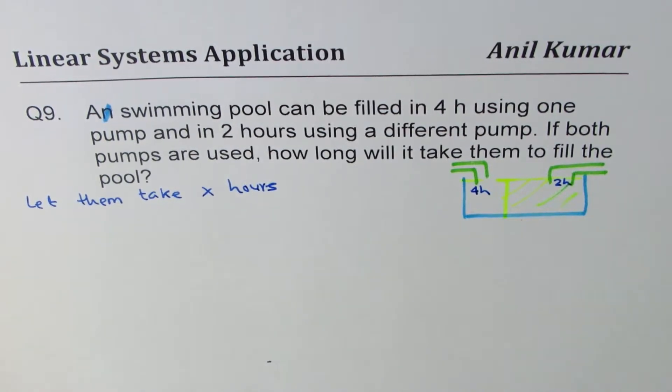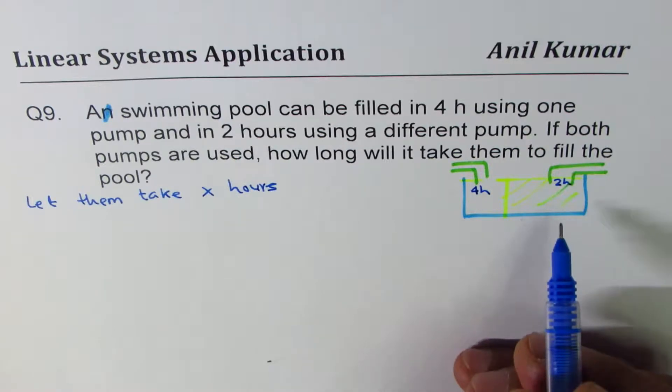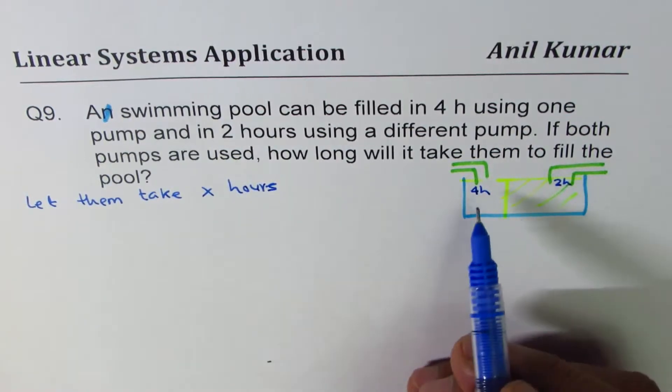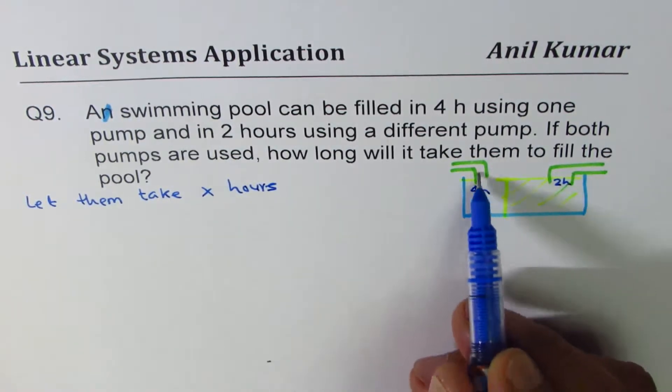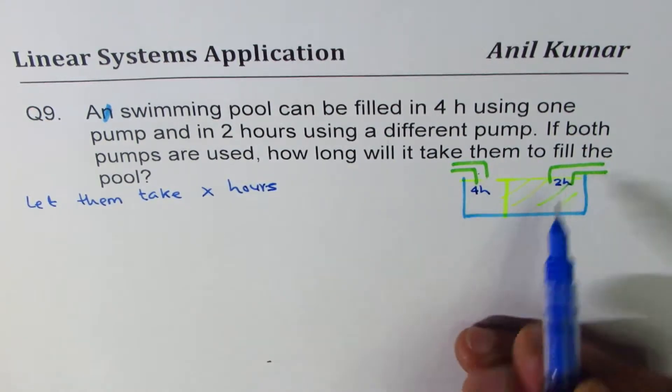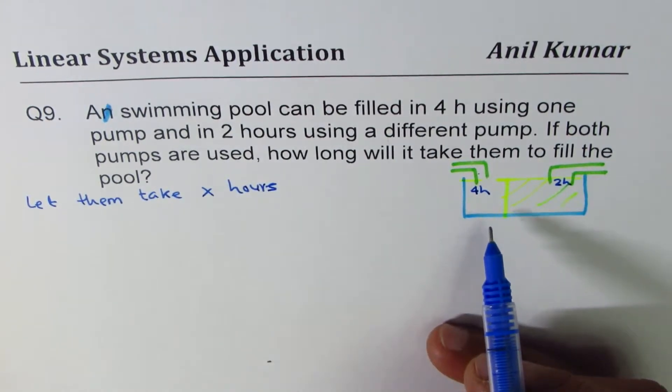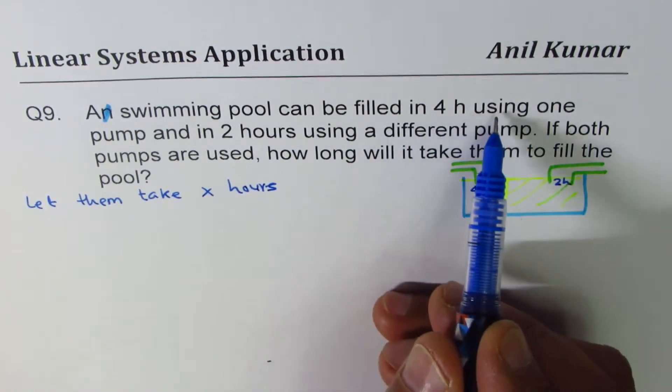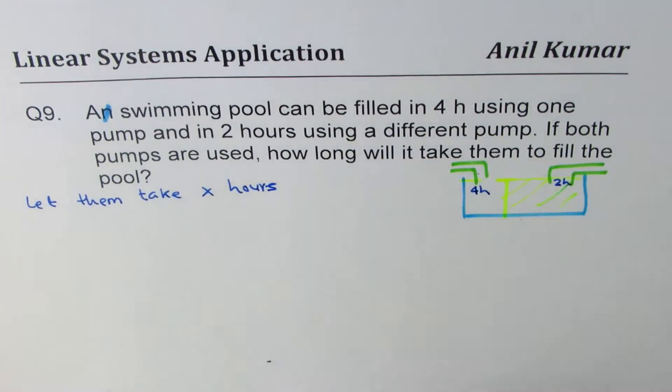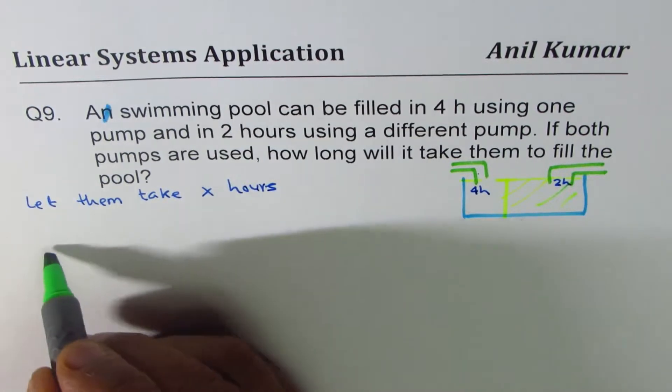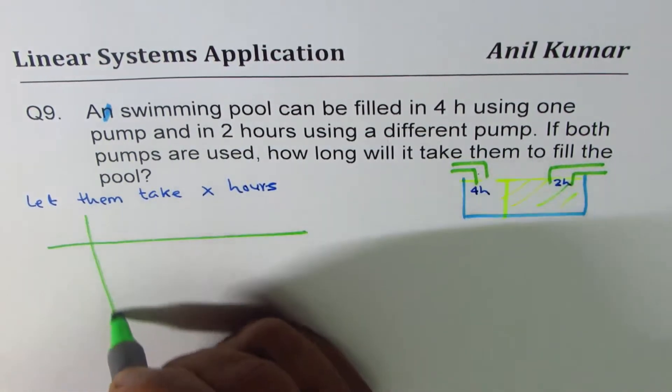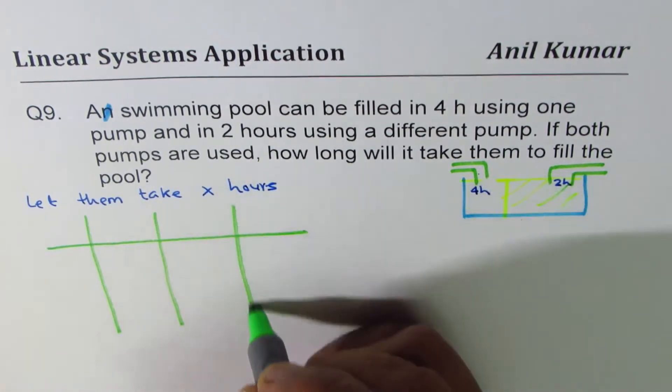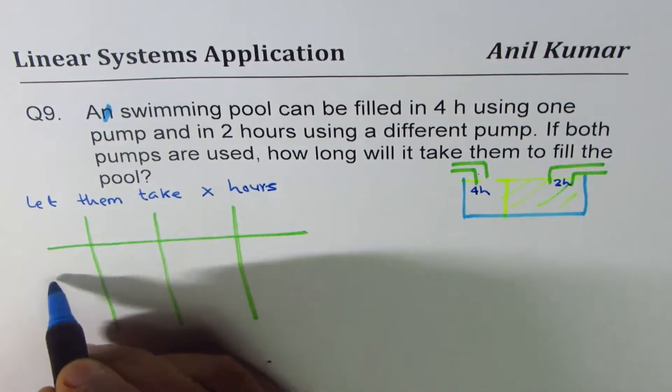So such questions can be thought about as what fraction of job is done by these two pumps, right? So think like this. A swimming pool can be filled in four hours using one pump. So what we do here is we can kind of sometimes make a table just to understand. We have two pumps.